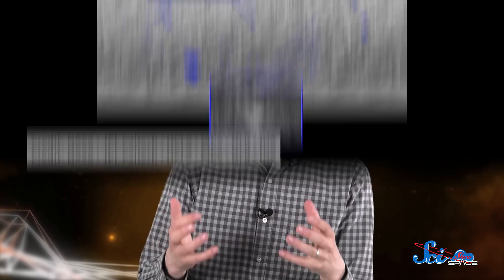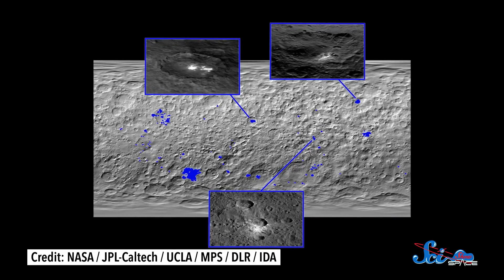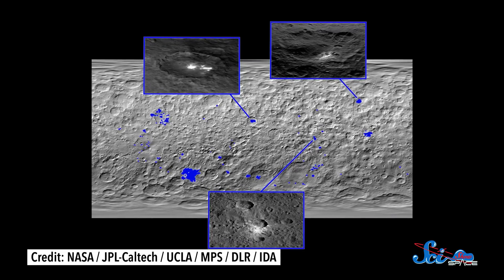As we were approaching Ceres, one of the first things we noticed were these bright spots, like big, shiny reflectors stuck all over the surface. These spots were a huge mystery for a while.